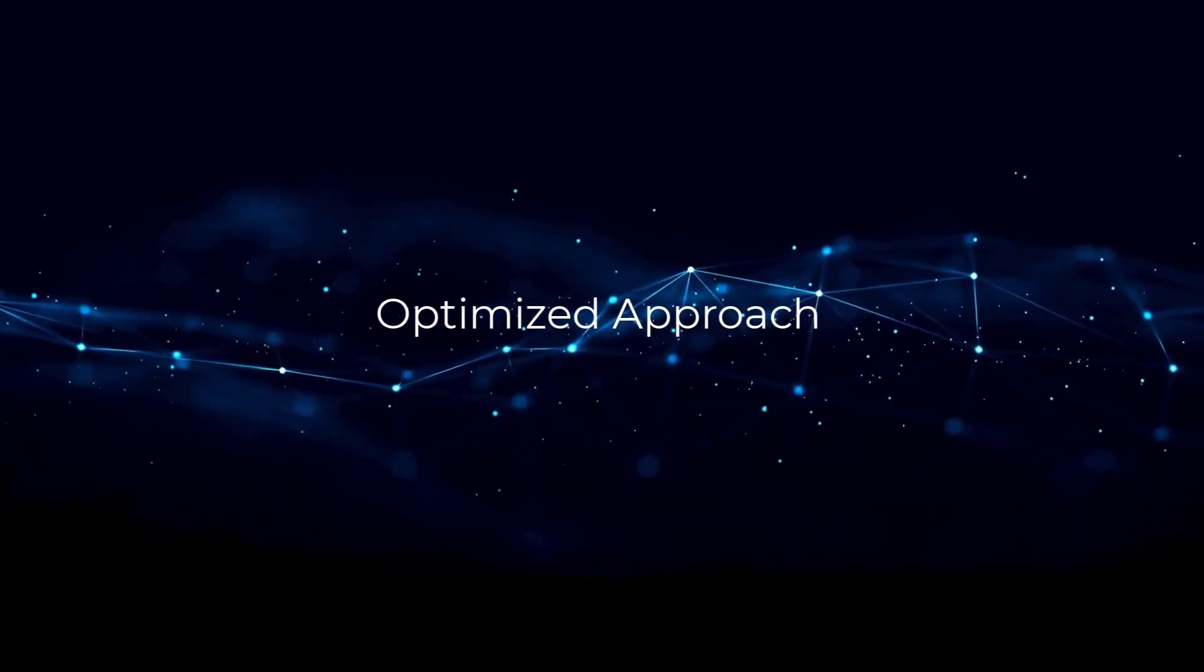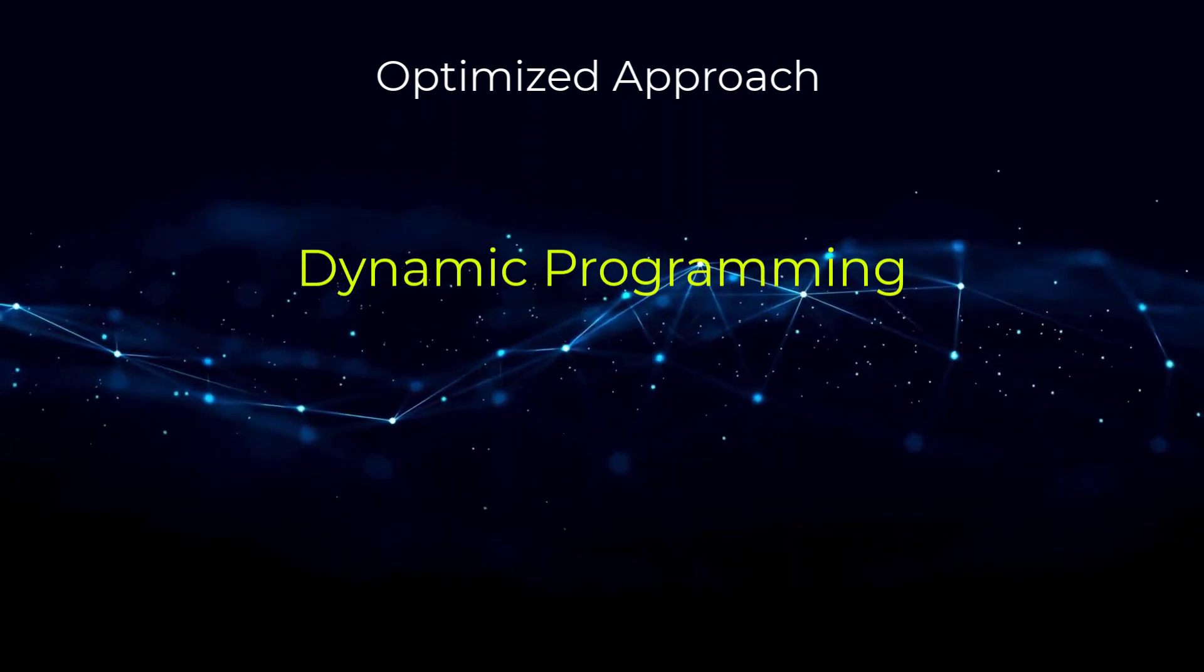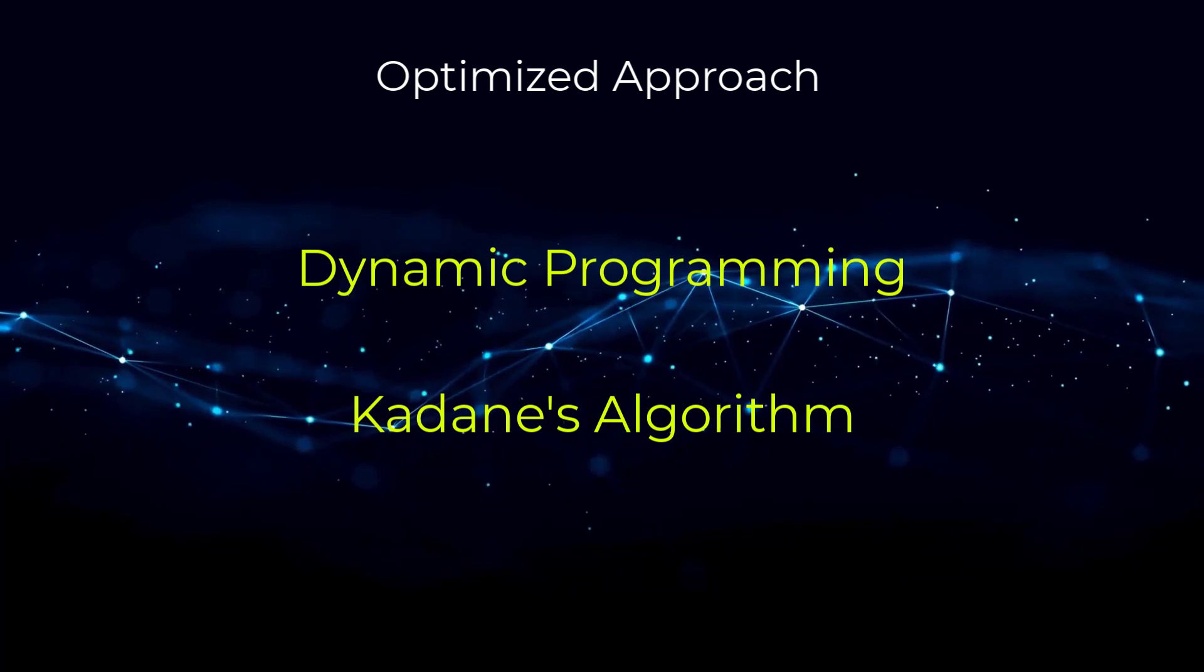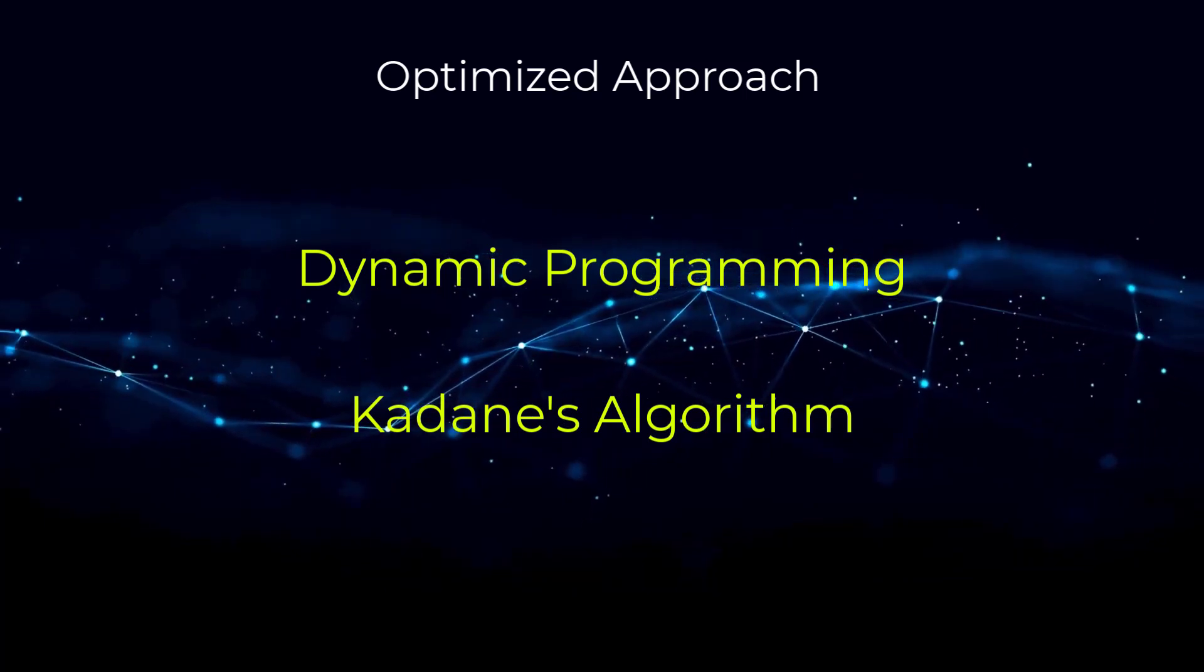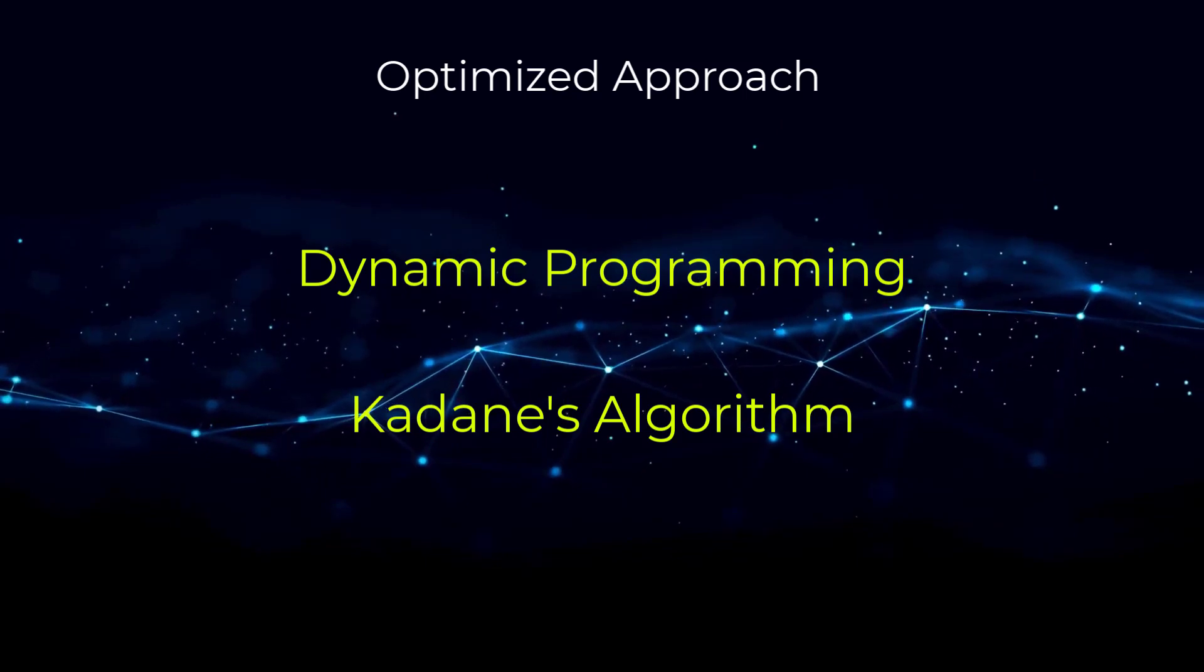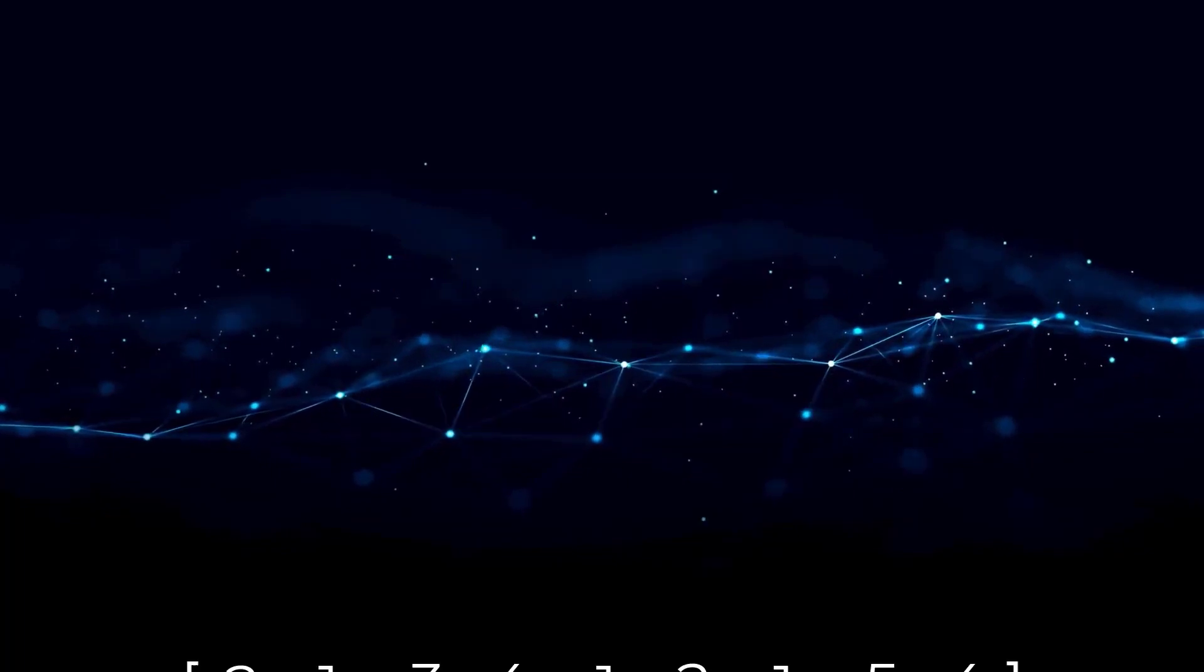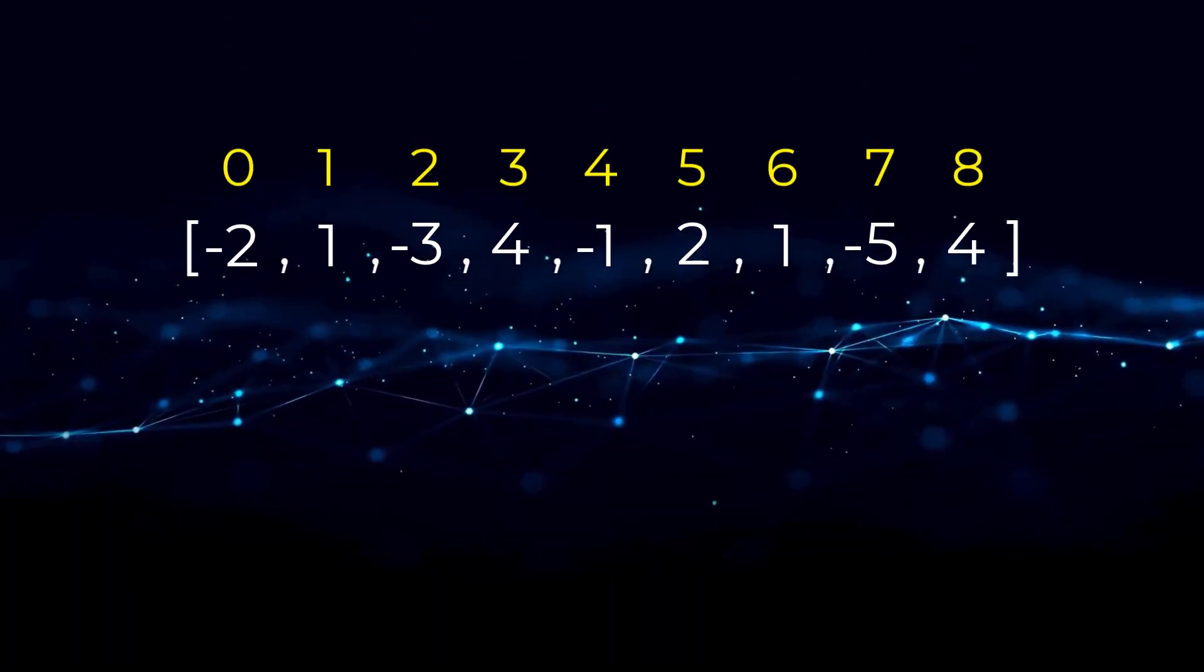As for the optimized approach, this involves the use of dynamic programming using what's known as Kadane's algorithm. An optimization that is required is removing the need to compute every single subarray. Many of the subarrays are useless since their sum is less than others. So let's walk through a full example of this approach.